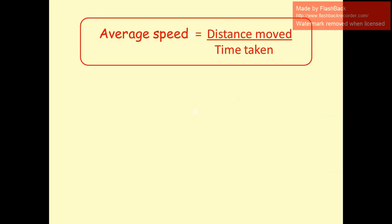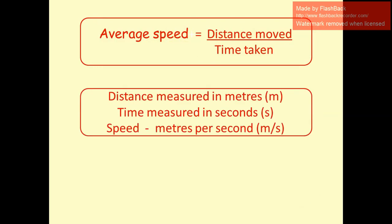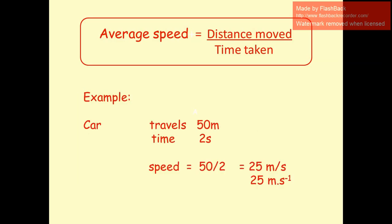Average speed is simply given by the equation: distance divided by time taken for the movement. Distance is measured in meters and time is measured in seconds, so speed is therefore in meters per second. It's very important to make sure that you are using the right units — if you have kilometers, you have to convert to meters; if you have minutes or hours, you have to convert to seconds.